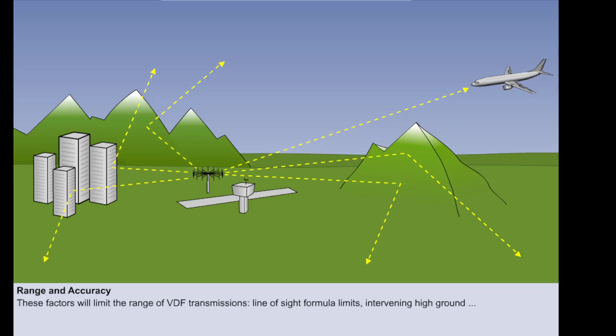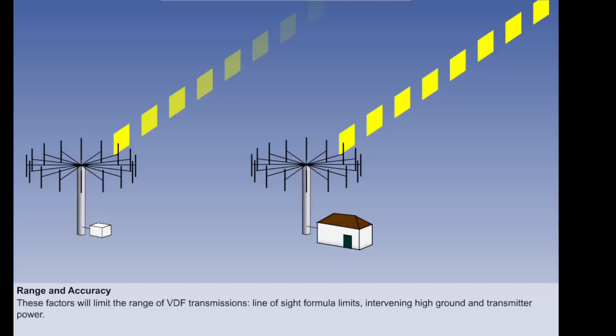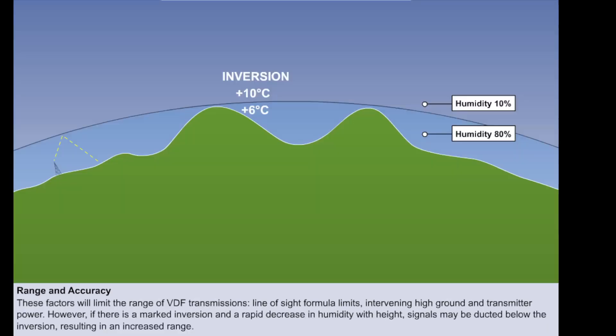Intervening high ground will limit range, especially for low-flying aircraft in hilly terrain. High ground and buildings at the station may also reflect and distort signals. The power of the aircraft and ground transmitters will also affect range. The weather, on the other hand, can sometimes increase range. If there is a marked inversion and a rapid decrease in humidity with height, signals may be ducted below the inversion, resulting in an increased range.